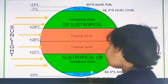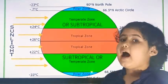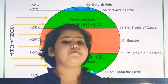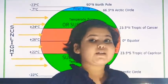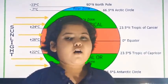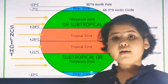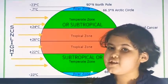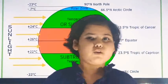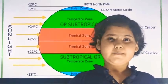Now let's learn about the Sub-Tropical Zone. Just as the region between the Tropic of Cancer and Tropic of Capricorn is the Tropical Zone, the region between the Tropic of Cancer and the Arctic Circle is known as the Sub-Tropical Zone, or Temperate Zone. There are two Sub-Tropical Zones — one in the Northern Hemisphere and one in the Southern Hemisphere — and this zone is neither too hot nor too cold.